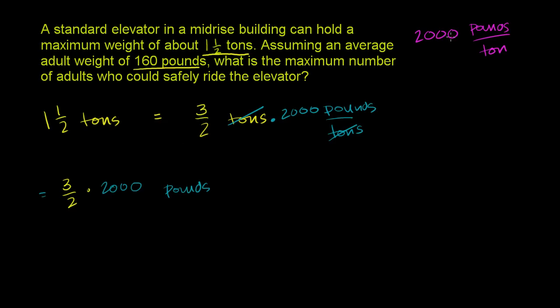If there are 2,000 pounds per ton, and there are 1 and a half tons, I should multiply 1 and a half times 2,000 to get the number of pounds. So what is 3 halves times 2,000? We can actually simplify it right over here. This is going to be 3 times 2,000 over 2 pounds. We can divide the numerator and the denominator by 2. This will become 1,000. And this will become 1. So it's 3 times 1,000 pounds. Or this is equal to 3,000 pounds.